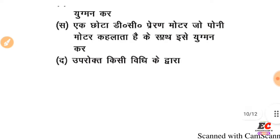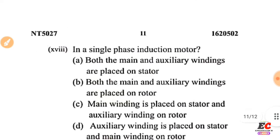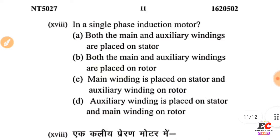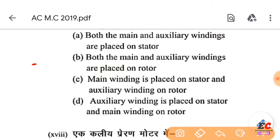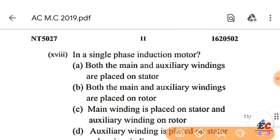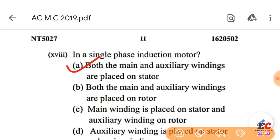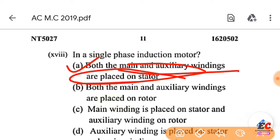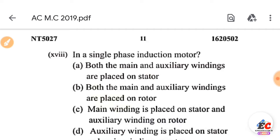Question number 18: In a single-phase induction motor, both the main and auxiliary windings are placed on the stator. That is the right option.